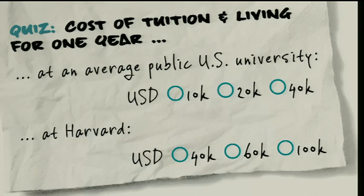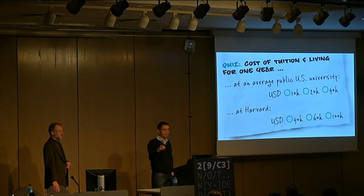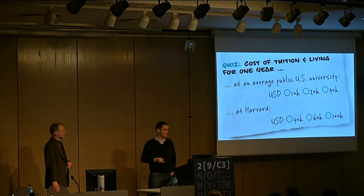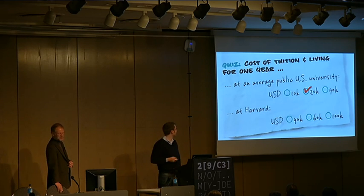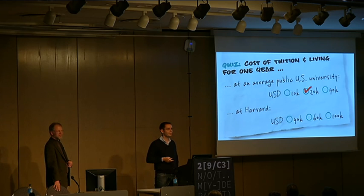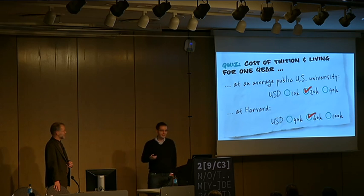One way to look at this is the financial perspective. But since this is kind of a lecture, we're going to quiz you. What do you estimate is the cost of tuition and living for one year at an average U.S. university? Who thinks it's $10,000 per year? Nobody. $20,000? $40,000? It's only $20,000 for a public U.S. university. What about Harvard? Officially they say $60,000 — that's tuition and living.